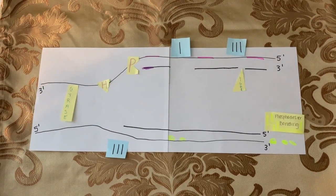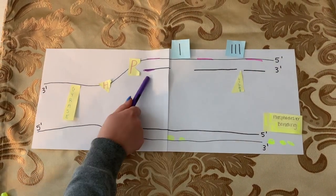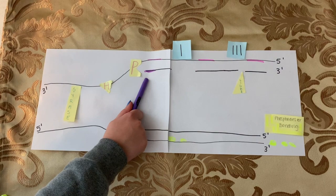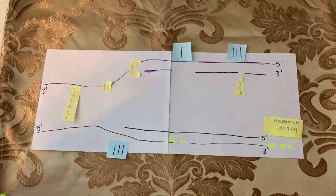The pre-existing chain that is being added to is the RNA primer. The RNA primer is made from the enzyme RNA primase.